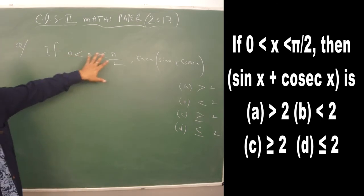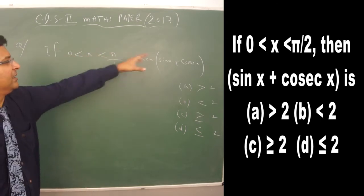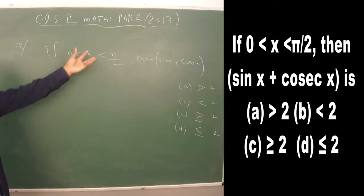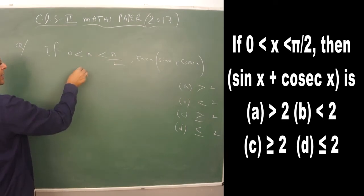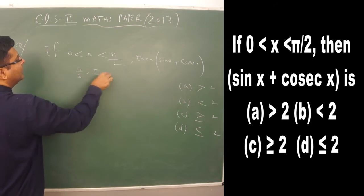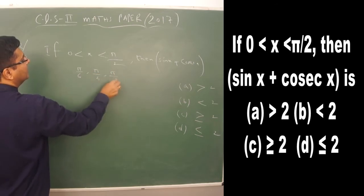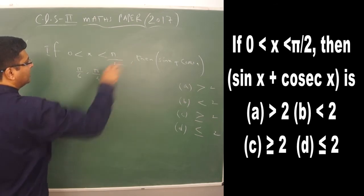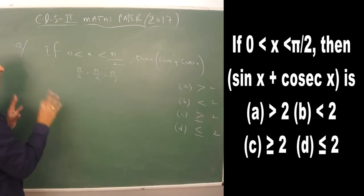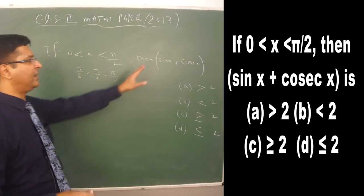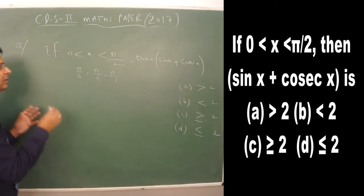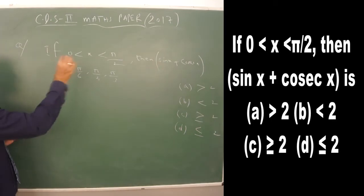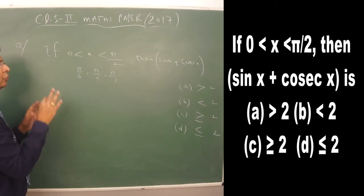One approach is to substitute values like π/6, π/4, or π/3 from the interval to check the range of sin x + cosec x. However, to solve any question of this type conceptually, you need to understand the AM-GM inequality.